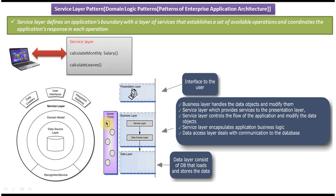The service layer modifies domain objects, takes values from them, and performs business processing. The data access layer is responsible for communicating with the database — retrieving values from database tables and performing calculations. The business layer handles and modifies domain objects. The data layer loads data from the database or stores data to the database.